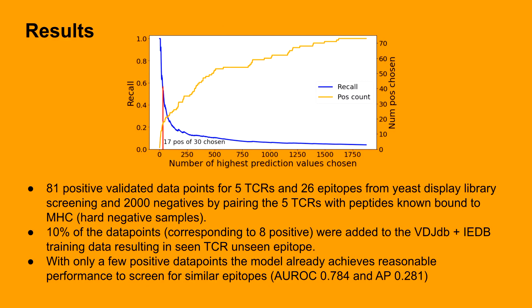In the last experiment we took 81 positive data points from a yeast display study and generated negatives known to bind the same MHC. This means that the generated negatives are hard to distinguish from the positives. Thus, we aided the model by adding 10% of the data to the train set. With this addition, we achieved a reasonable performance to screen for similar epitopes. From the plot we can see the recall and the number of positives chosen as a function of the number of highest prediction values in the test set, showing how well new epitopes can be screened.